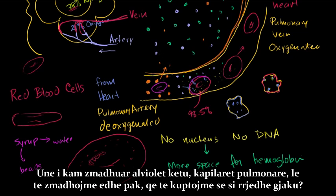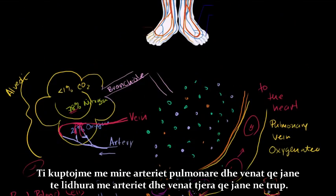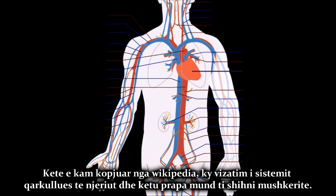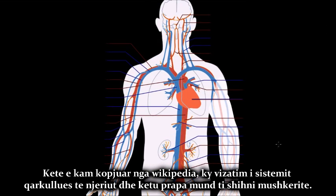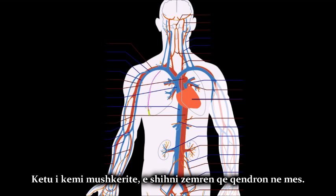I've been all zoomed in on the alveolus and these pulmonary capillaries. Let's zoom out a lot, just to understand how the blood is flowing, and get a better understanding of pulmonary arteries and veins relative to the other arteries and veins in the body. I've copied a diagram of the human circulatory system from Wikipedia. Here in the back you can see the lungs, and the heart is sitting right in the middle.